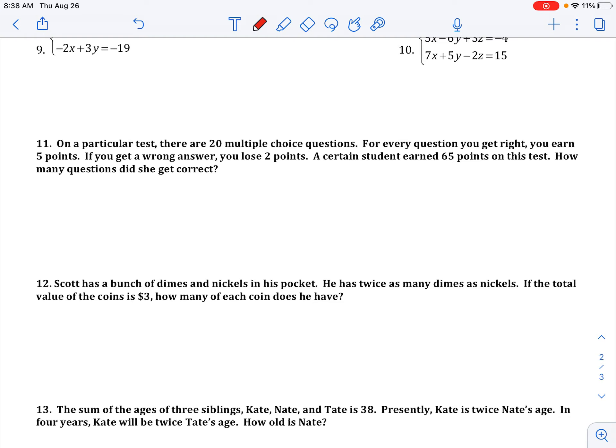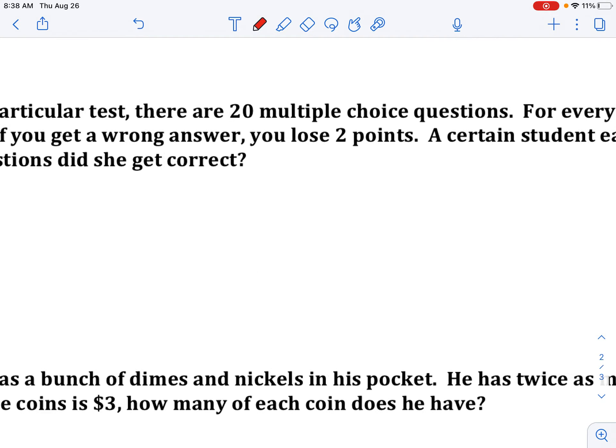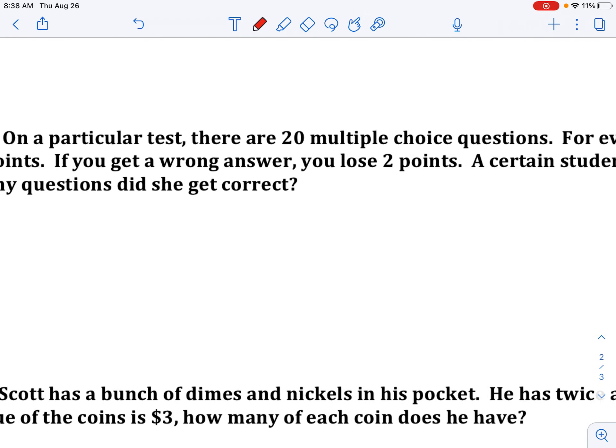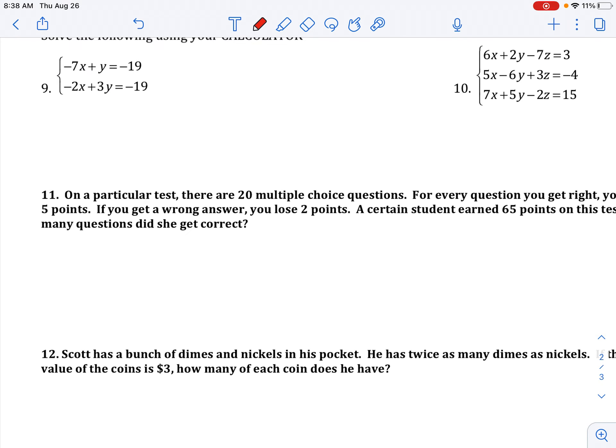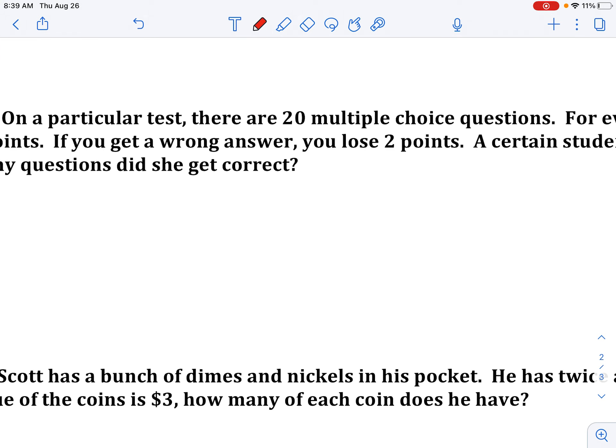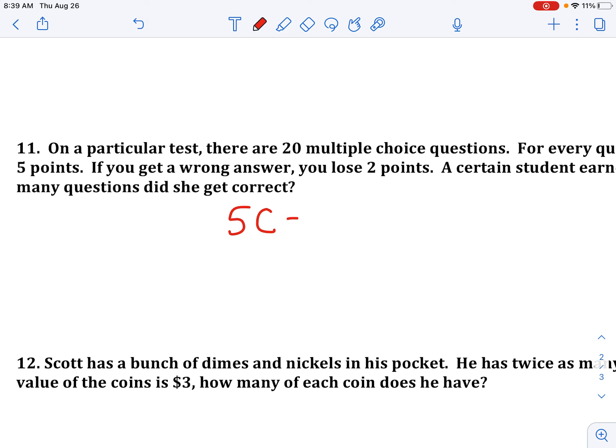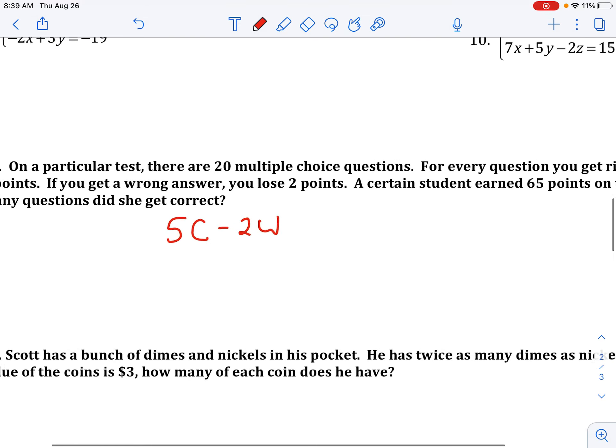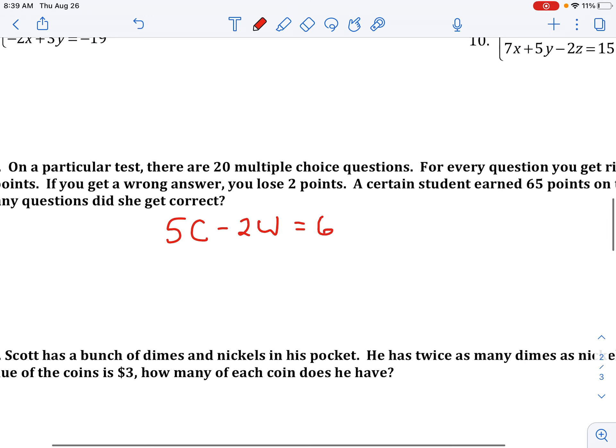When we read that, we have two types of questions: ones that you get right and ones that you get wrong. So our first equation in our system, we're going to get 5 points for every question correct, and we're going to subtract 2 points for every question that we got wrong, and that student earned 65 points using that scale.